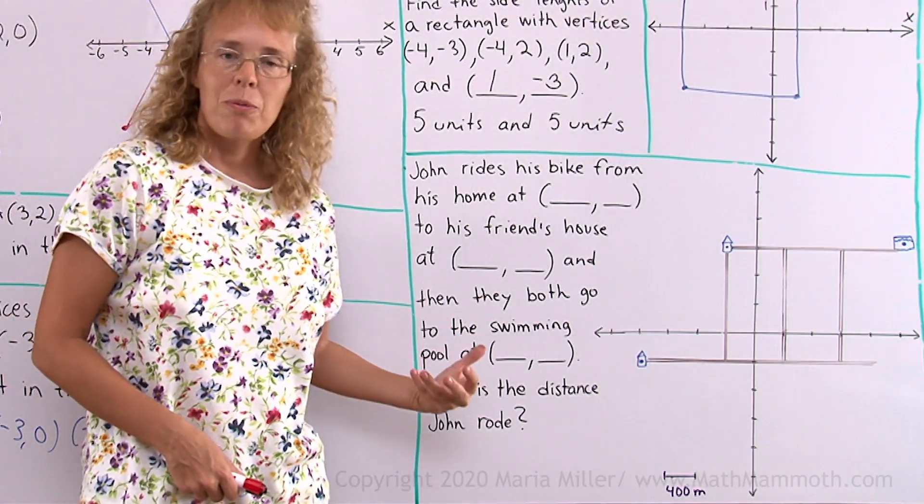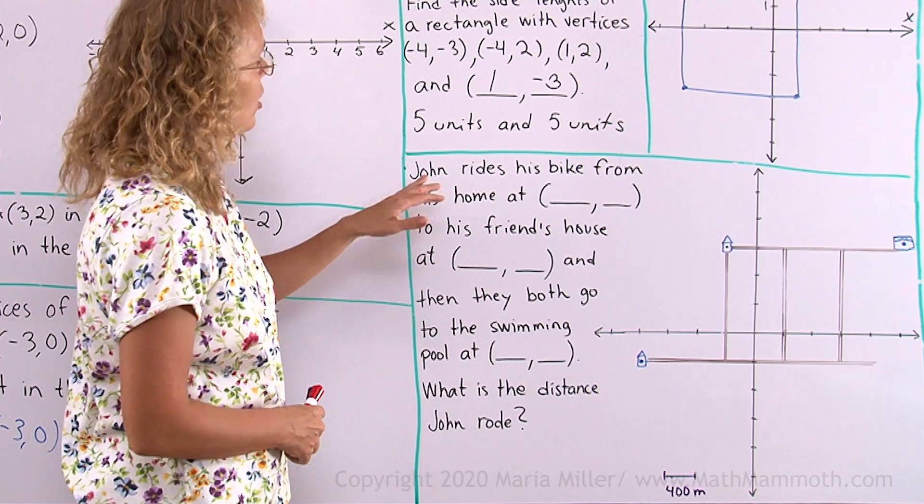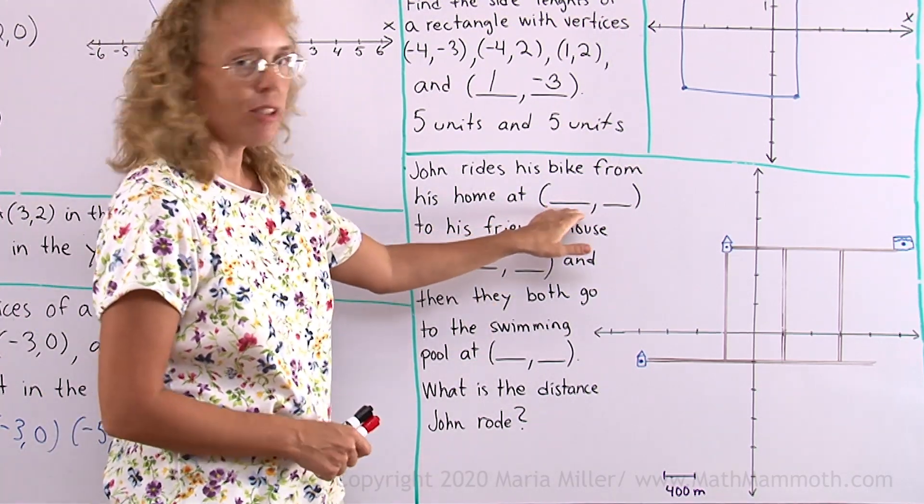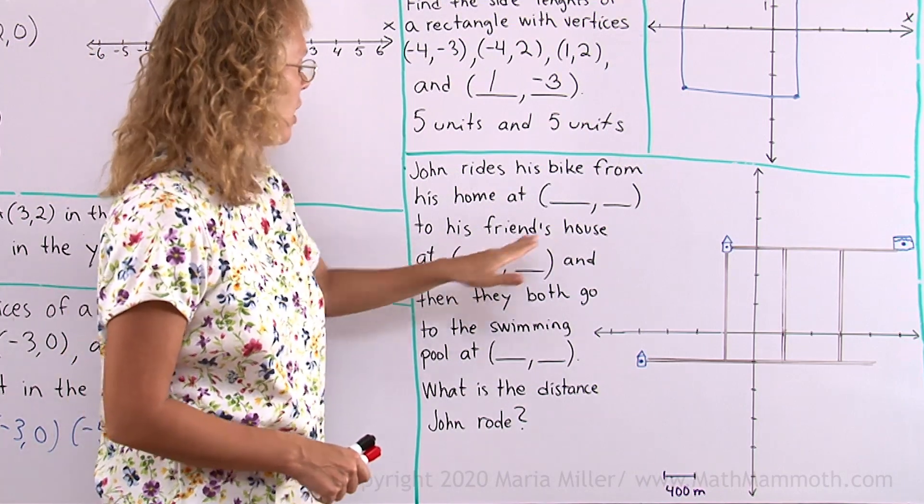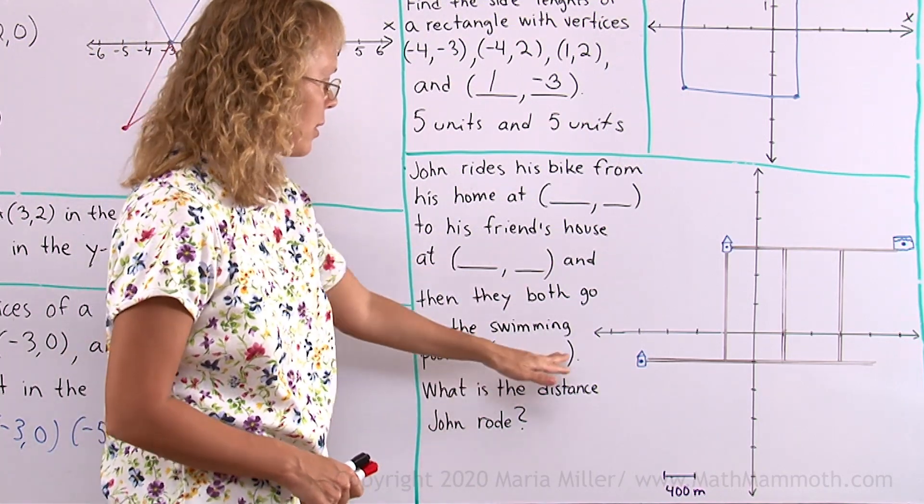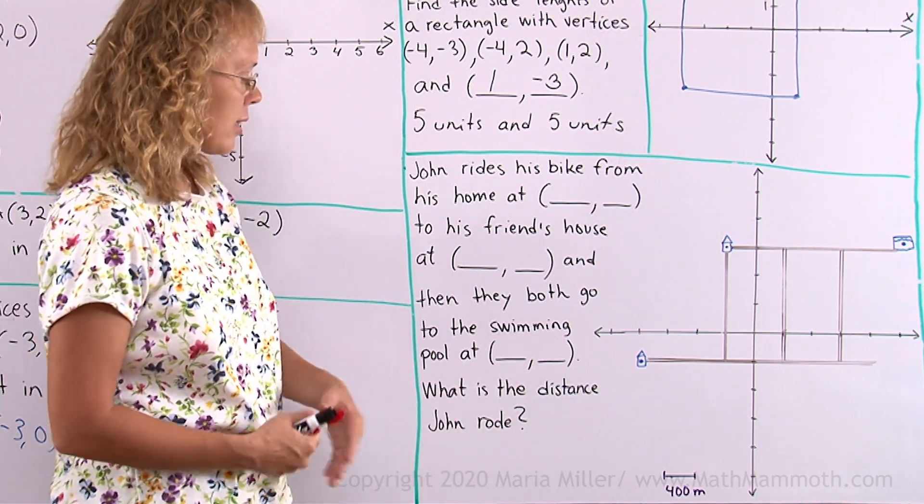Here's another problem about distance between points. John rides his bike from his home at coordinates missing to his friend's house at coordinates missing and then they both go to the swimming pool at these coordinates. What is the distance that John rode?